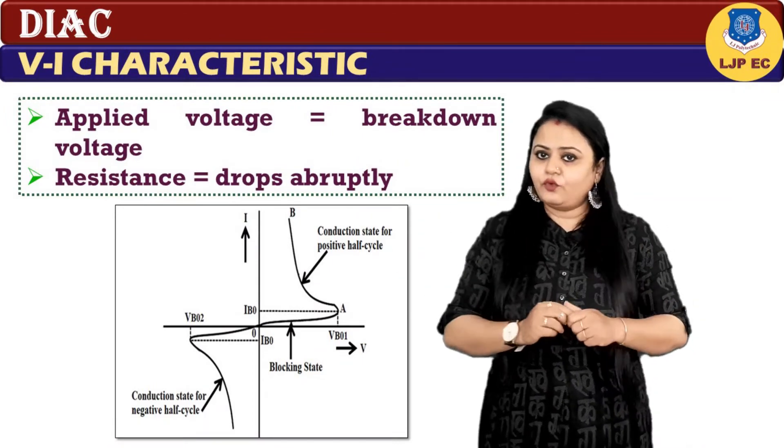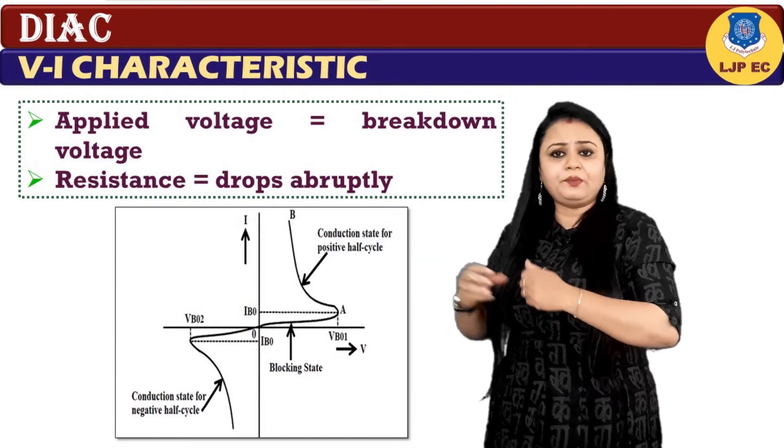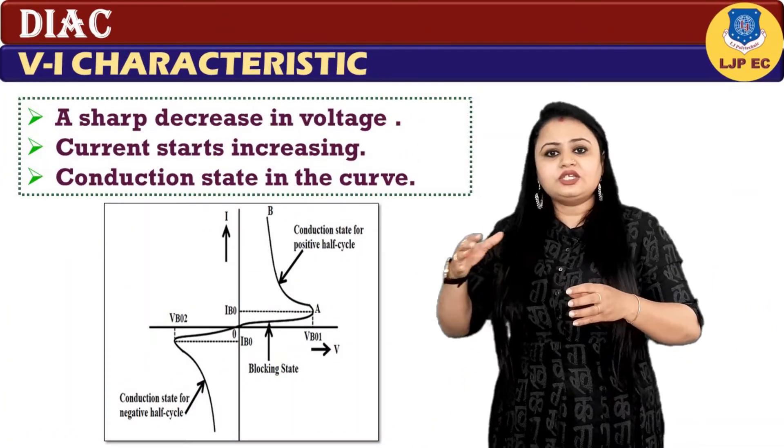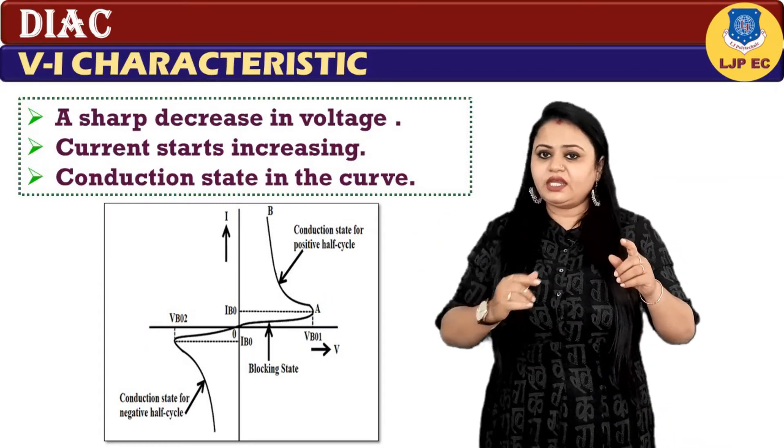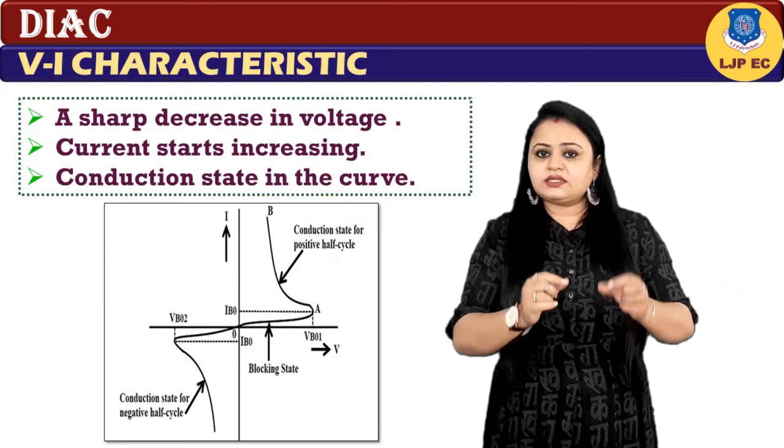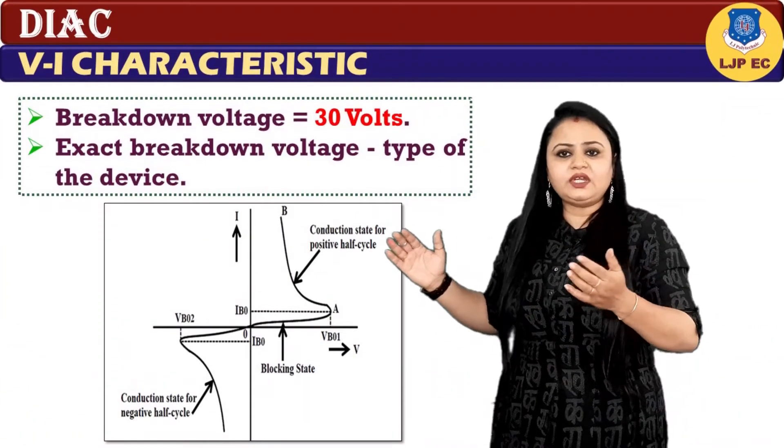Once the applied voltage reaches the breakdown voltage, the resistance of the DIAC drops abruptly, and then it starts conducting, which leads to a sharp decrease in voltage and current starts increasing. This is mentioned as conduction state in the curve.